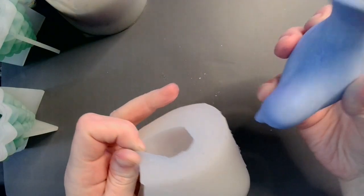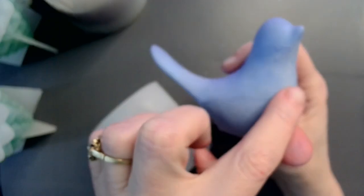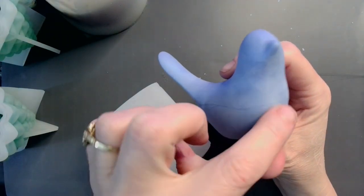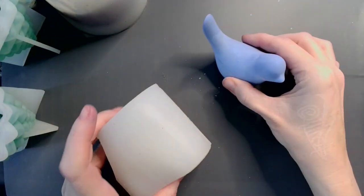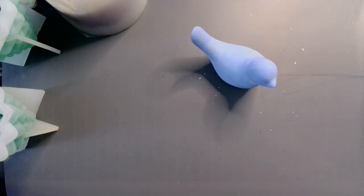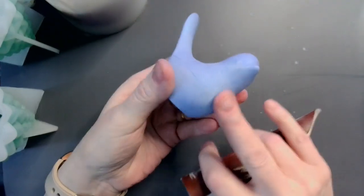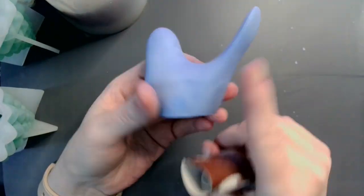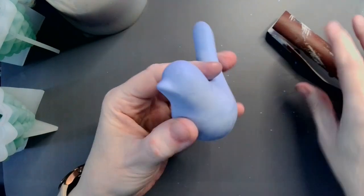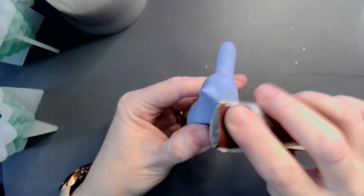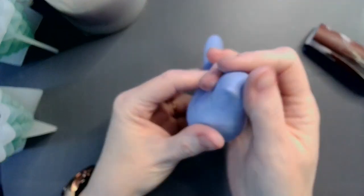There we go, there he is. Our little blue bird of happiness. I see that's not a flaw actually, that's just part of the mica powder, so not a problem. We will let this little guy cure completely, give him about 24 hours, and then we will give him his coating of sealant.